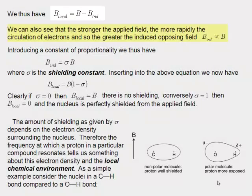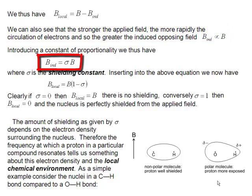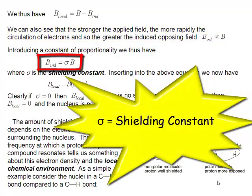If we make the applied field stronger, then our electrons are going to circulate more and more rapidly, and as they do that, they're going to make a stronger induced field. So the induced field is going to be linearly proportional to the strength of the applied field. And so we put constant of proportionality in there sigma, the shielding constant.